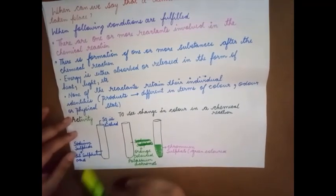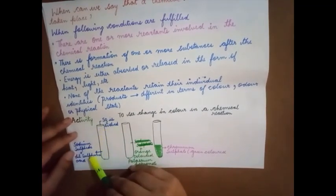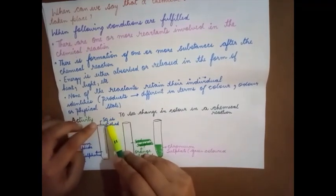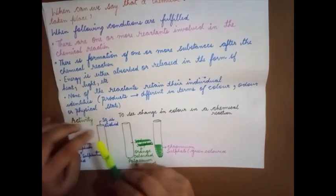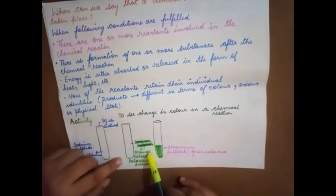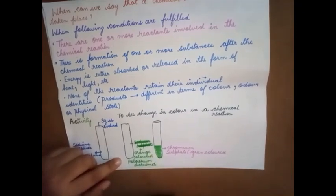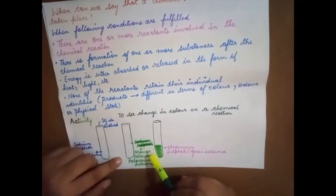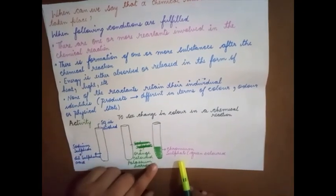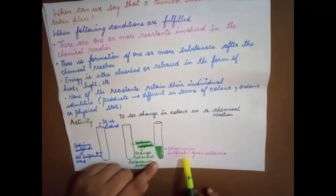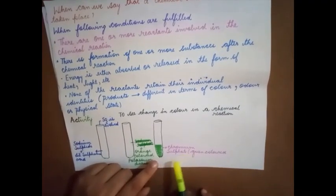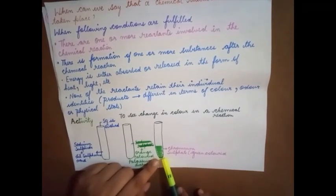In this beaker, we are taking sodium sulfide, which is white in color. To that, we are adding dilute sulfuric acid. Once dilute sulfuric acid is added, sulfur dioxide gas is evolved. Then we add orange-colored potassium dichromate to the same test tube. A green-colored product is formed — that product is chromium sulfide.